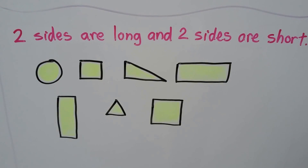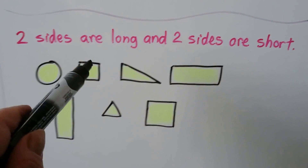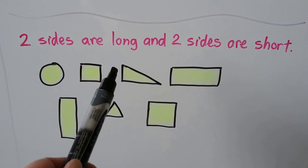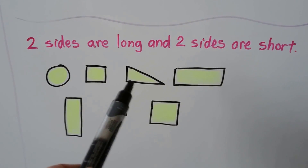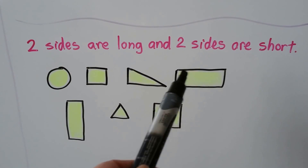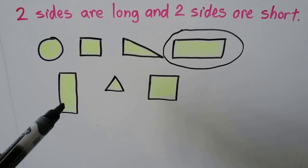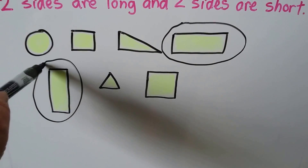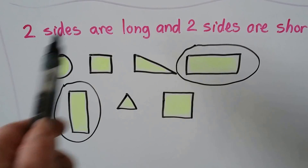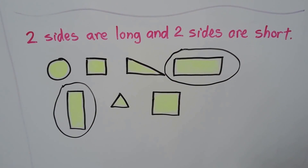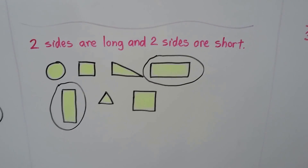This rule says: two sides are long and two sides are short. Circles don't have any sides, so it's not the circle. Squares have sides that are all the same length, so it's not the square. This one has a side that's long and short, but it doesn't have two long and two short sides. A rectangle has two long sides and two short sides — so we can circle that one; it follows the rule. Triangles only have three sides, and two plus two makes four sides.